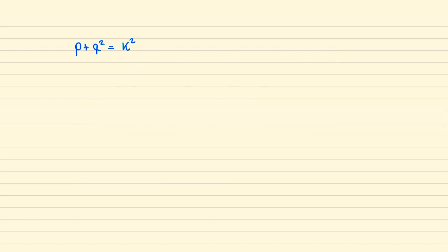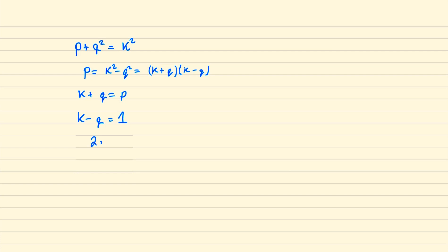To begin this problem we'll start by rearranging for p to be the difference of two squares, which we can then factorise as (k + q) and (k - q). Given that p is prime and k + q is bigger than k - q, it follows that k + q must equal p and k - q must equal 1. If we subtract these two equations from each other then we have 2q = p - 1, or p = 2q + 1.